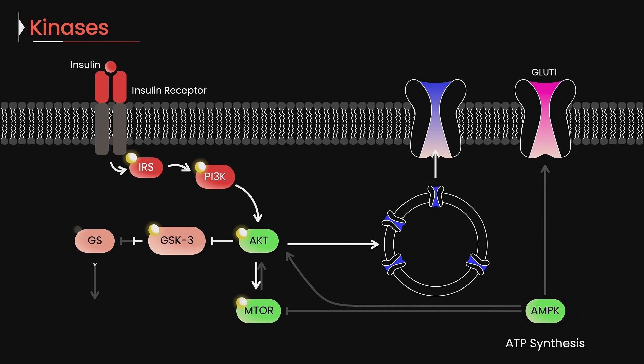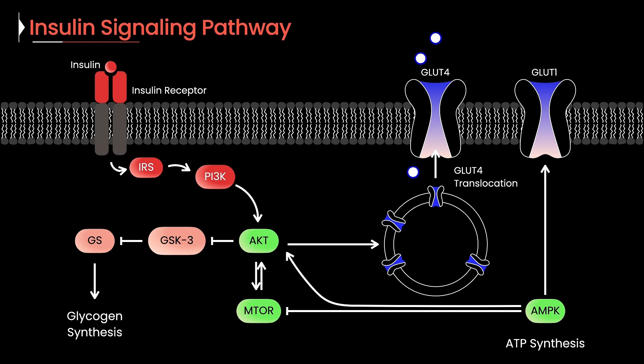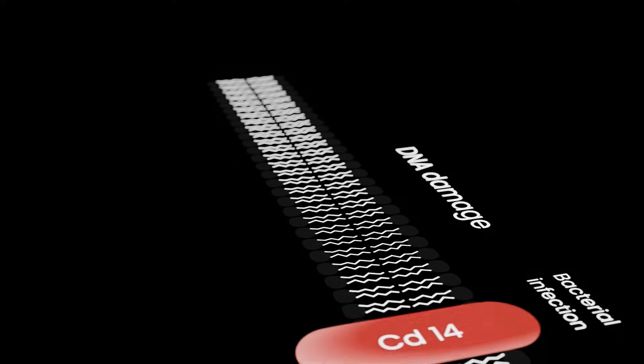While that's going on, AKT also turns on enzymes that stitch glucose molecules together into glycogen, storing energy for later. All of this happens in tight coordination, like clockwork. Kinases orchestrate the timing, making sure the cells respond smoothly to a surge in sugar.